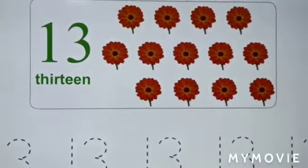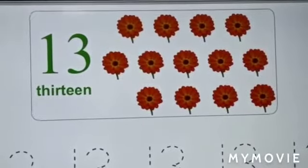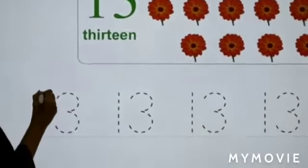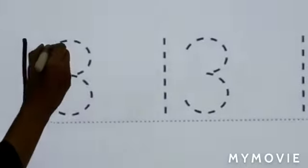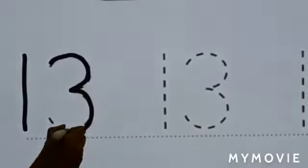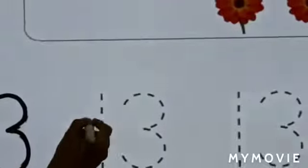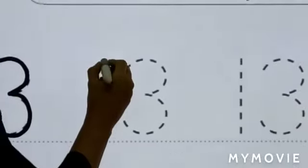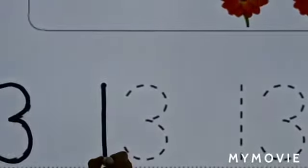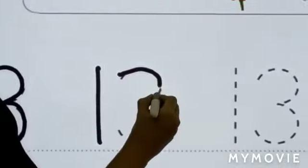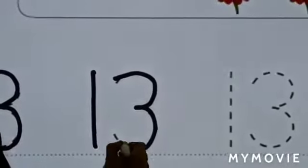Now let's learn how to write number thirteen. You will write number one first. One and three is number thirteen. Don't forget, you have to write number one first. So one and three is number thirteen.